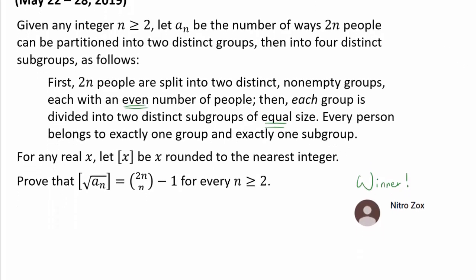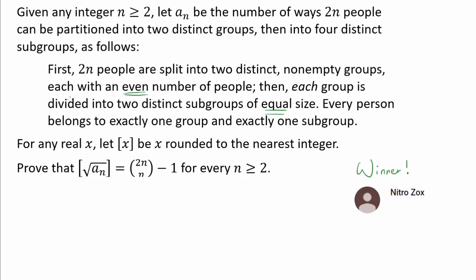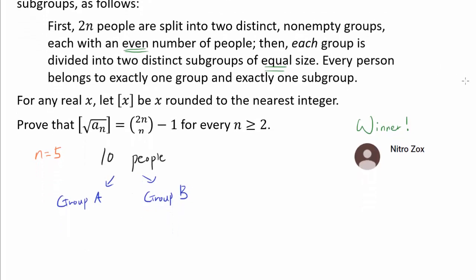Let's try to follow this process with some given value of n. Let's say n is equal to 5. So in this case, we have 2n people — we are starting with 10 people. In the first step, we are dividing the 10 people into 2 groups, say group A and group B. Each group is going to have an even number, but each group is non-empty.